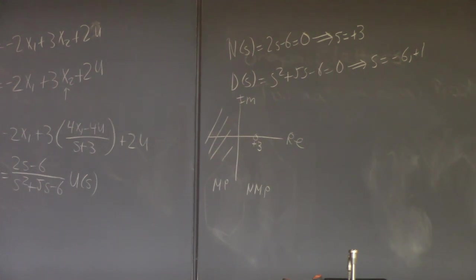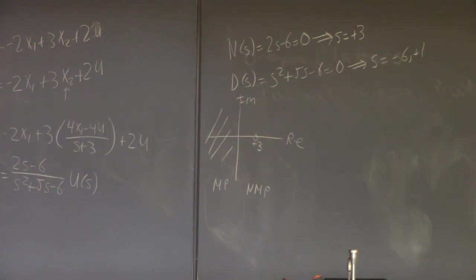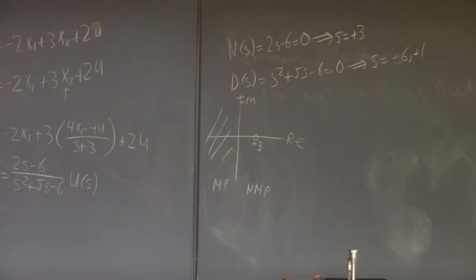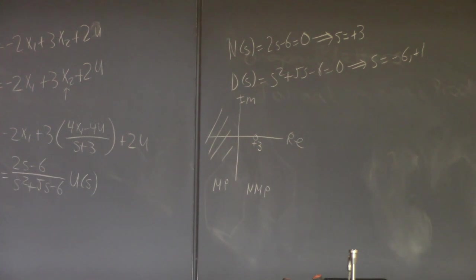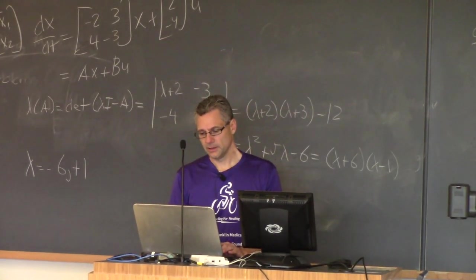So that was part two. Part three says: consider a proportional controller and use the Routh method to find the range of controller gains for which the closed-loop system is stable. Also, prove that the closed-loop system is stable for Kc equal minus 2. To apply the Routh method, we form the characteristic equation: 1 plus G times Gc equals zero.